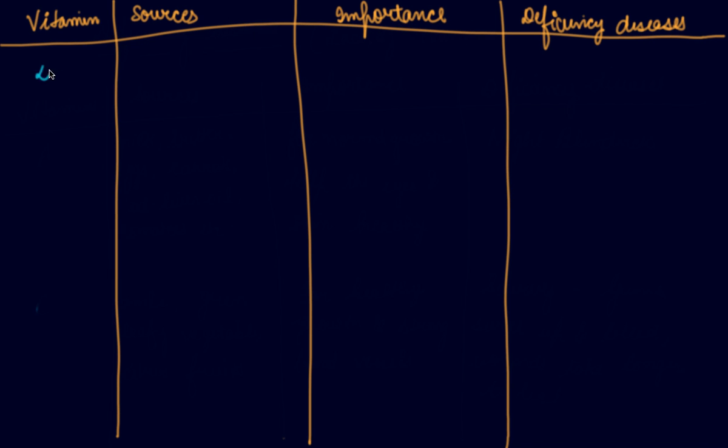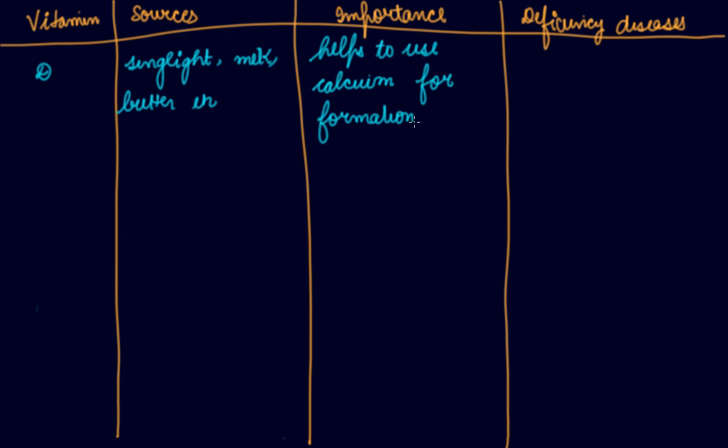Vitamin D - the main source is sunlight, then milk, butter, etc. It helps to use calcium for formation of strong bones and teeth.